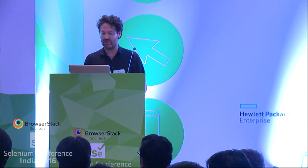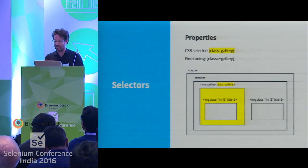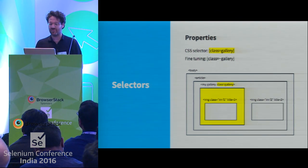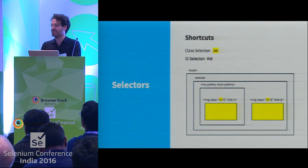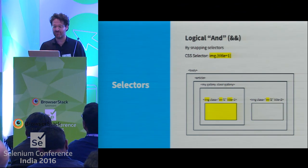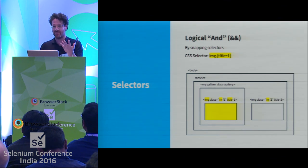Browsers find elements by looking at different properties — that's what they know how to do. They have optimizations and shortcuts for IDs and classes, and of course you can combine conditions: find something that has this attribute and this attribute.